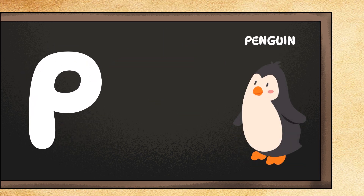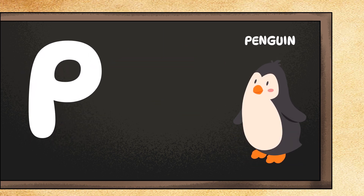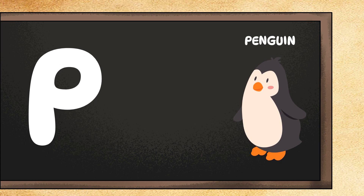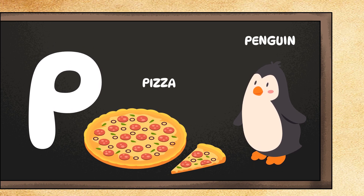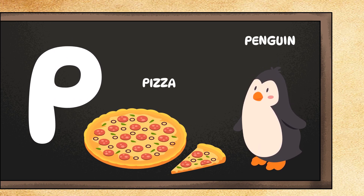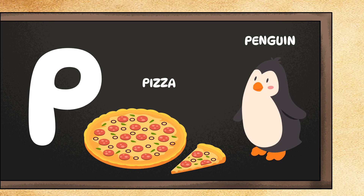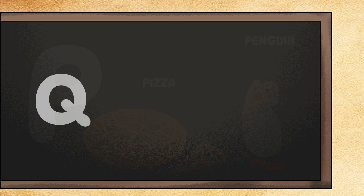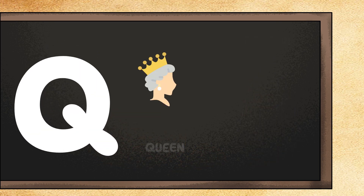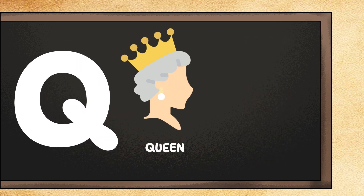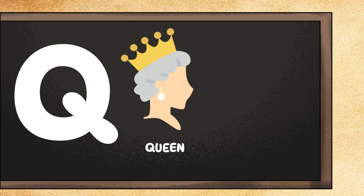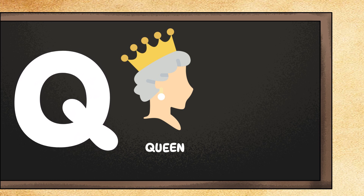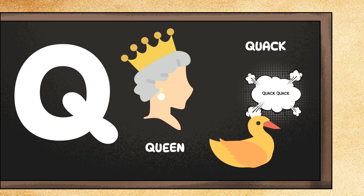P is for penguin. Can you waddle like a cute penguin? Adorable! P is also for pizza. Can you pretend to eat a delicious pizza? Munch munch! Q is for queen. Can you give a royal wave like a queen? Bravo! Q is also for quack. Can you quack like a silly duck? Quack quack!